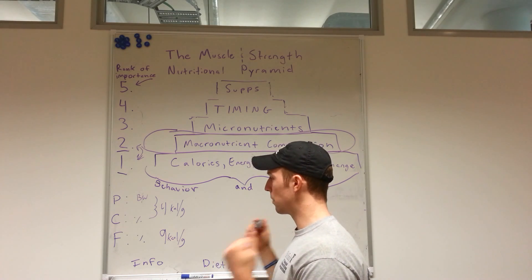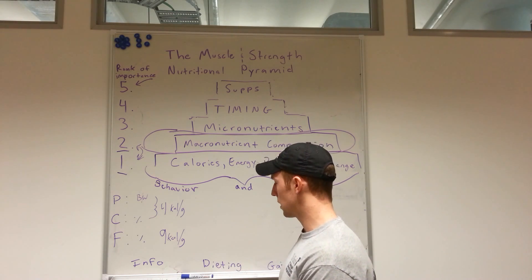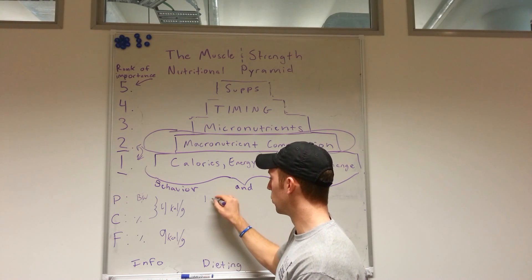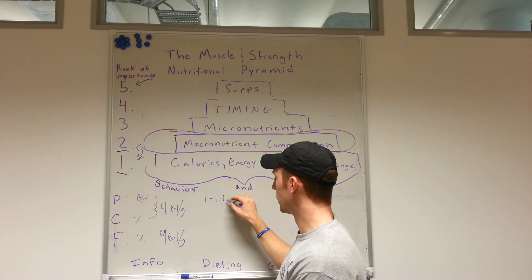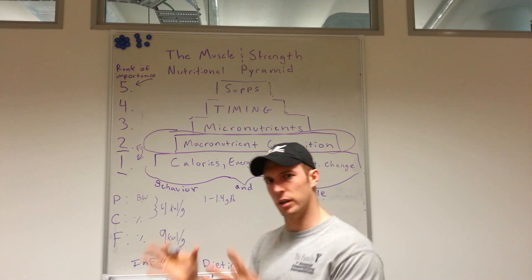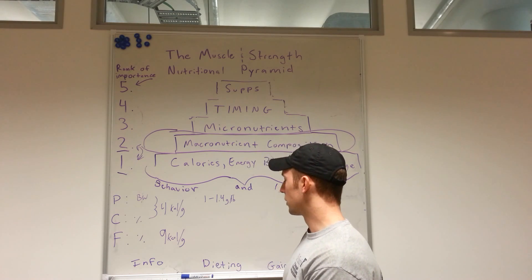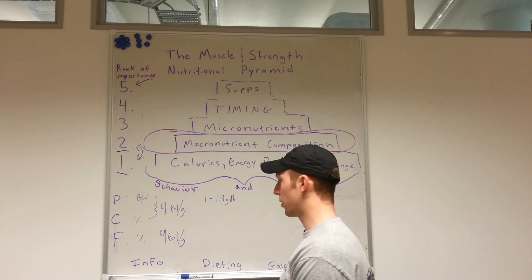So based on studies, anecdotal evidence, and my experience as a coach, what probably makes the most sense for protein intake while you're dieting is somewhere between 1 to 1.4 grams per pound. Why is there a range, not a hard number for everybody? Because a lot of things will affect us, and we'll talk about that.